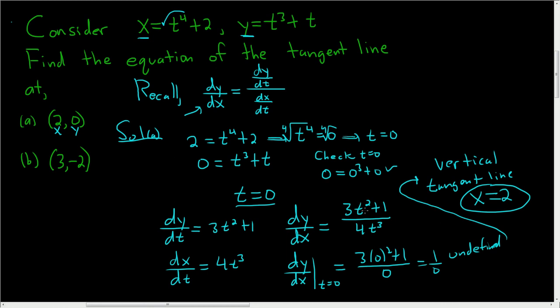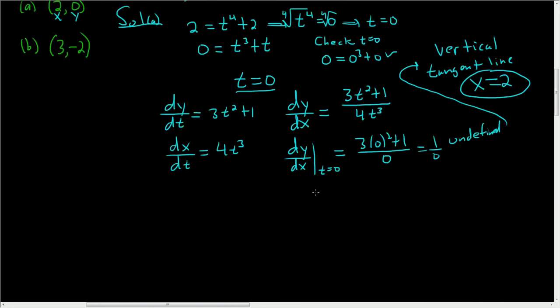Let's go ahead and do part B. I'm going to write down the equations again because you can't see them. So x was t to the fourth plus 2, and y was t cubed plus t. This time x is 3 and y is negative 2. So we have 3 equals t to the fourth plus 2, and then negative 2 equals t cubed plus t.